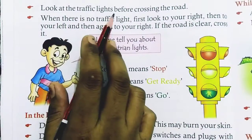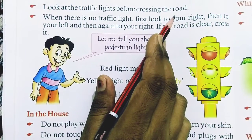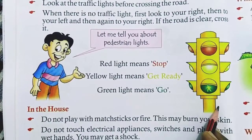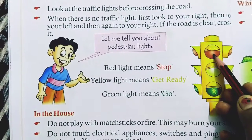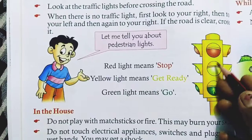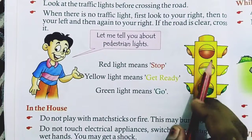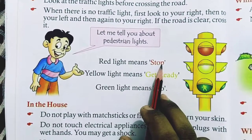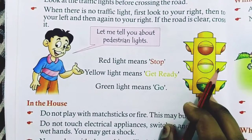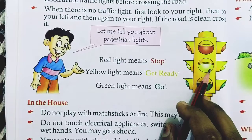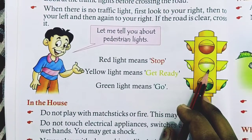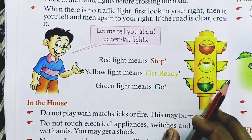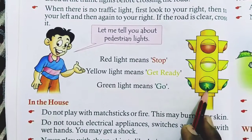Look at the traffic light before crossing the road. Always see the traffic light. There are three colors and each color has a different meaning. Red means danger — you have to stop. Green means you are ready to cross the road. Always follow the traffic light.